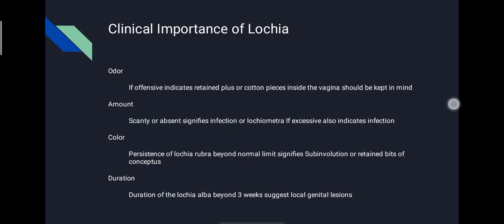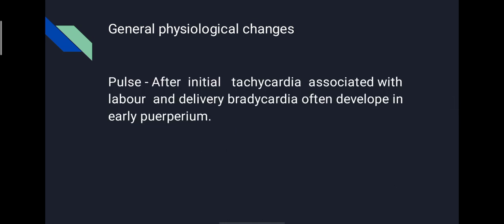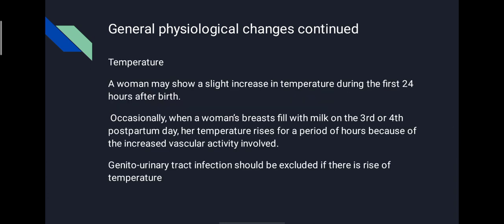General physiological changes: regarding pulse, after initial tachycardia associated with labor and delivery, bradycardia often develops in early puerperium. Regarding temperature, a woman may show a slight increase in temperature during the first 24 hours after birth. Occasionally, when a woman's breasts fill with milk on the third or fourth postpartum day, her temperature rises for a period of hours because of increased vascular activity involved. Genital urinary tract infection should be excluded if a rise in temperature persists.